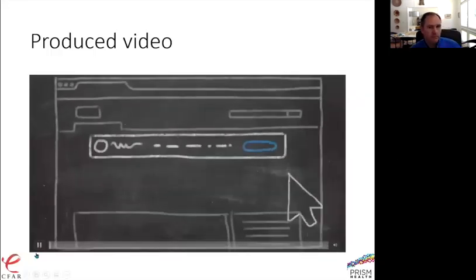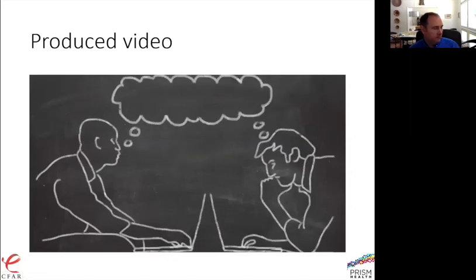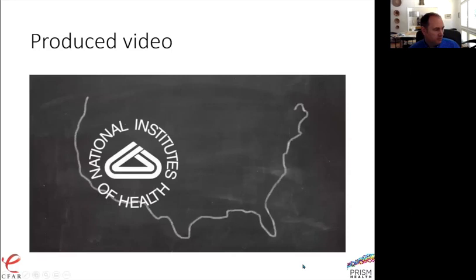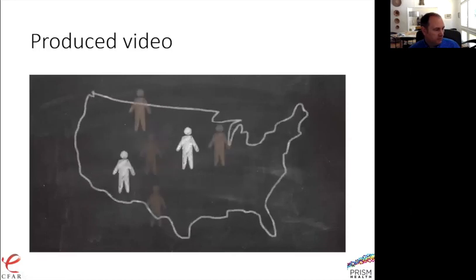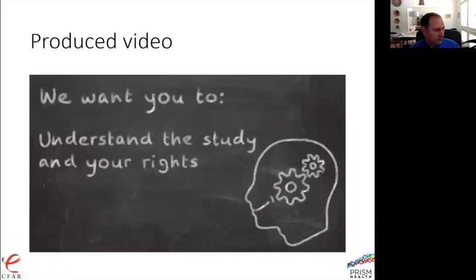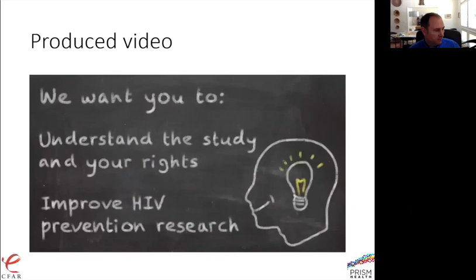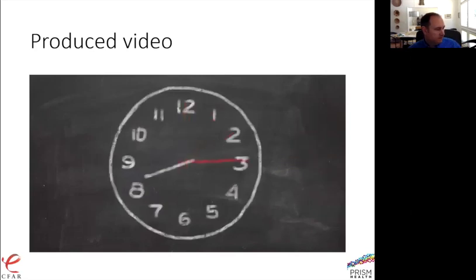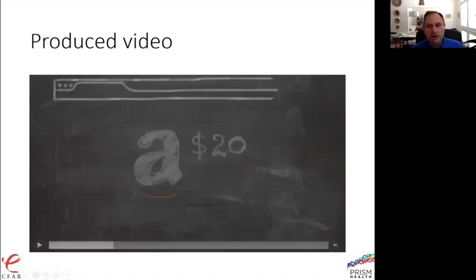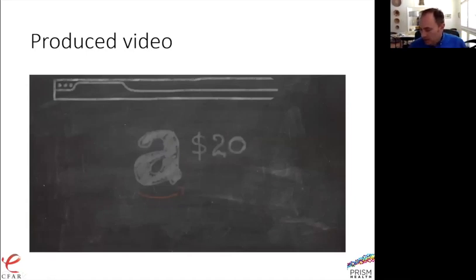Here's a bit of the professionally produced video: 'You've probably just clicked on a banner ad and are wondering what this study is really about. This video will give you all the information you need to decide if the study is right for you. The study is sponsored by the National Institutes of Health and led by Patrick Sullivan at Emory University. It will recruit about 5,000 men who have sex with men between 18 and 34 years old. If you join, you'll complete a 15-minute survey and receive $20 in the form of an Amazon gift card.' The staff-produced video is just Anthony reading the same script into a camera.